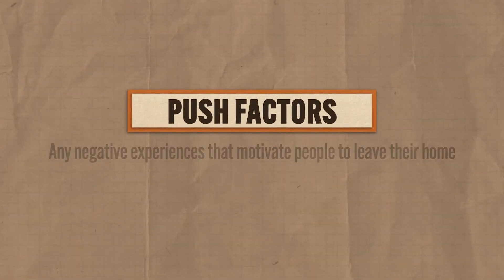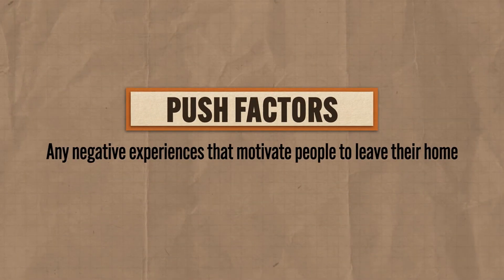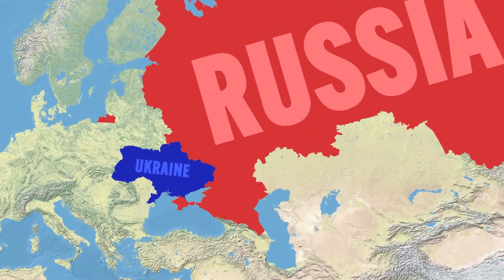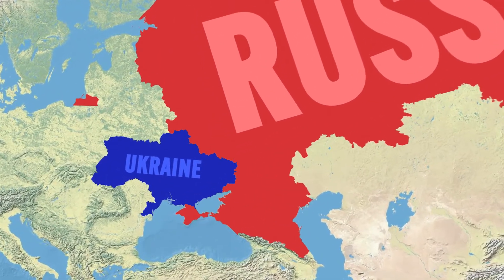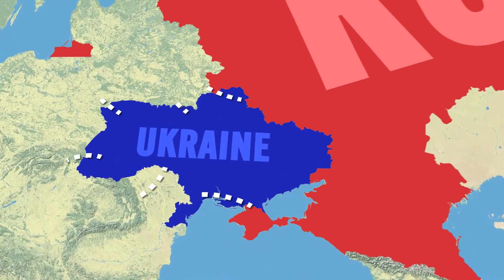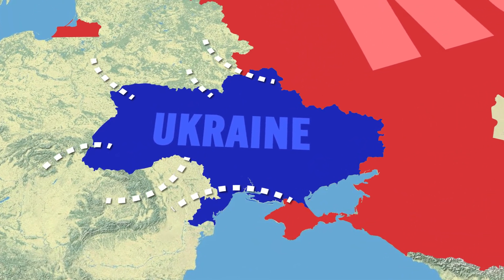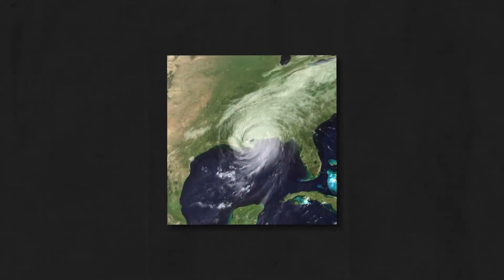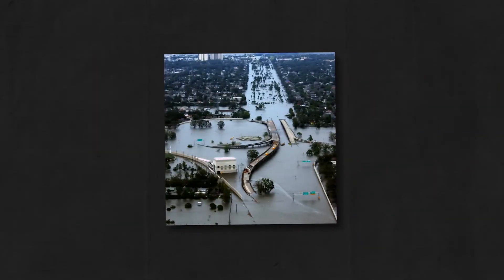First are push factors, which refer to any negative experiences that motivate people to leave their home — factors that push them out. For example, when Russia invaded Ukraine in 2022, the destruction and insecurity caused about 6 million Ukrainians to migrate to other European countries and throughout the world. Or natural disasters can cause people to migrate — Hurricane Katrina devastated New Orleans in 2005, causing the migration of over a million Americans to other U.S. states.